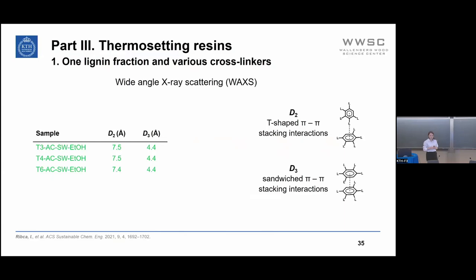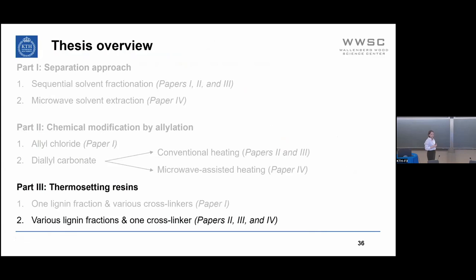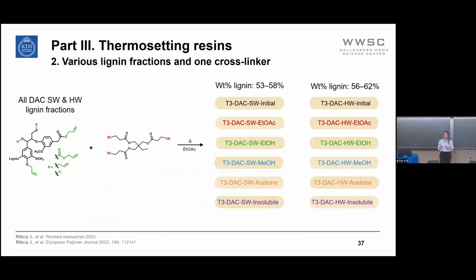For the nanoscale morphology of these thermosets, we identified only D2 and D3 features and noticed no differences at the nanoscale when changing the crosslinker. In the second part of the thermoset study, we used various lignin fractions with one crosslinker, to see how the lignin fractions affect the final material properties.